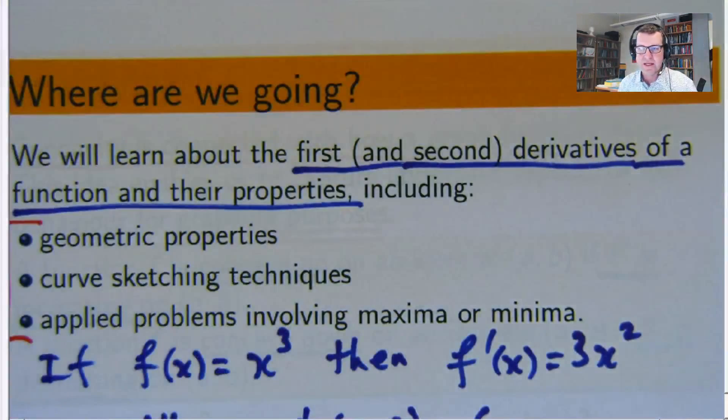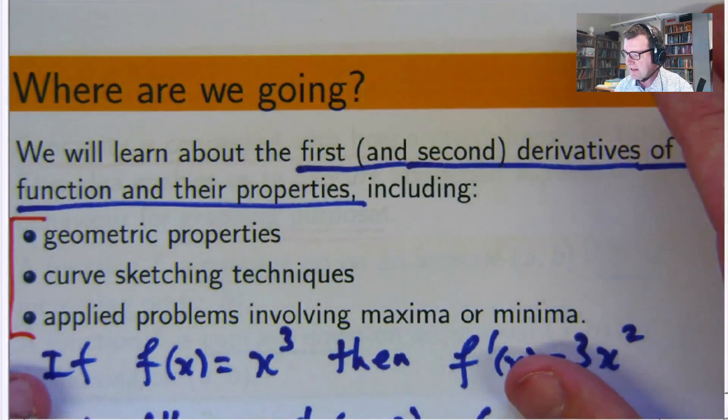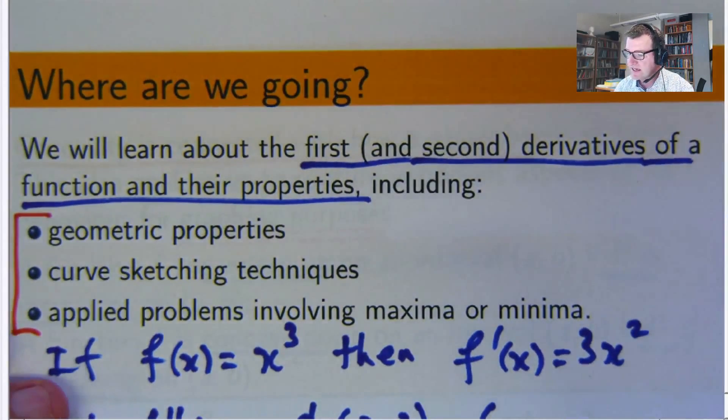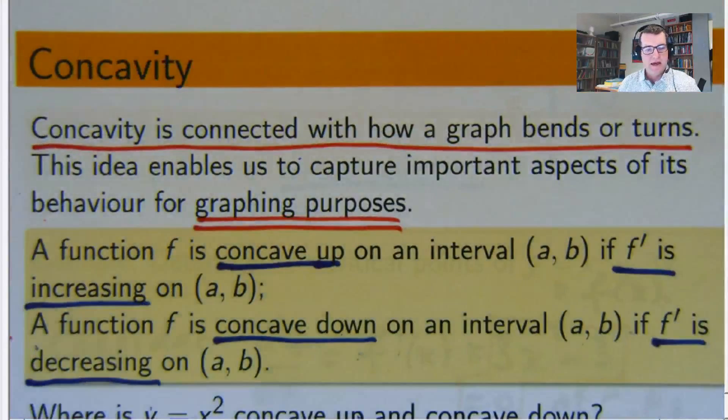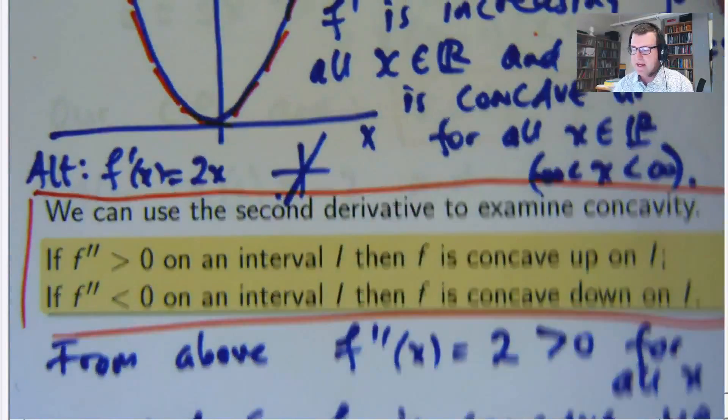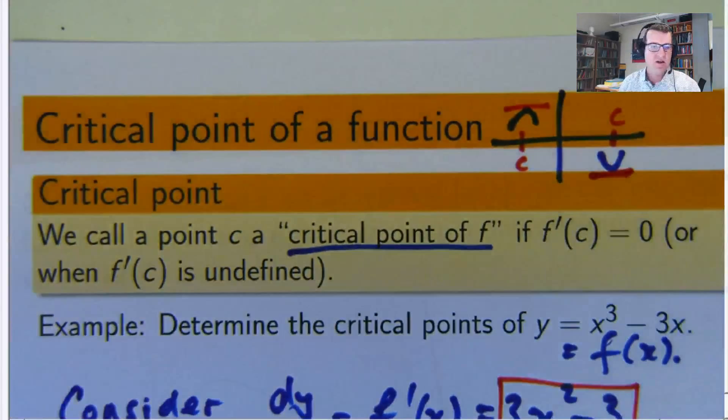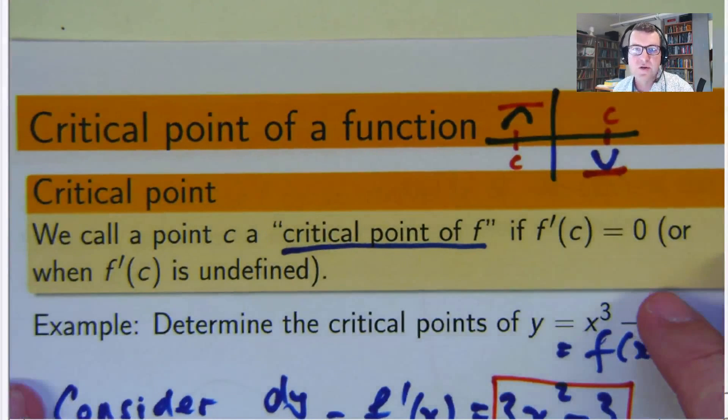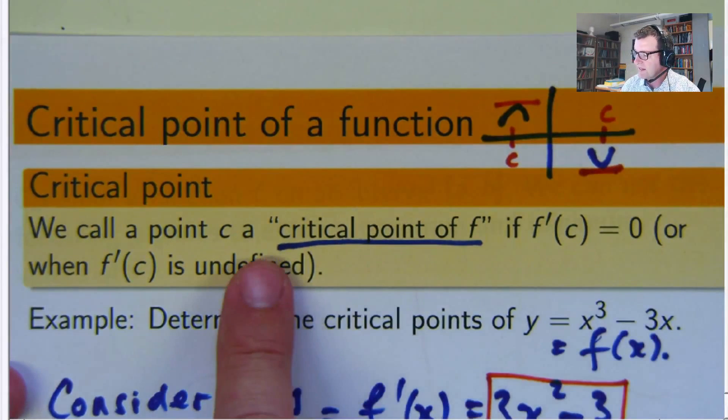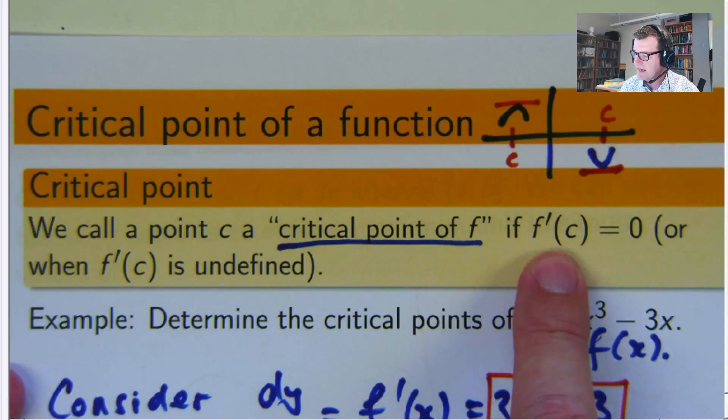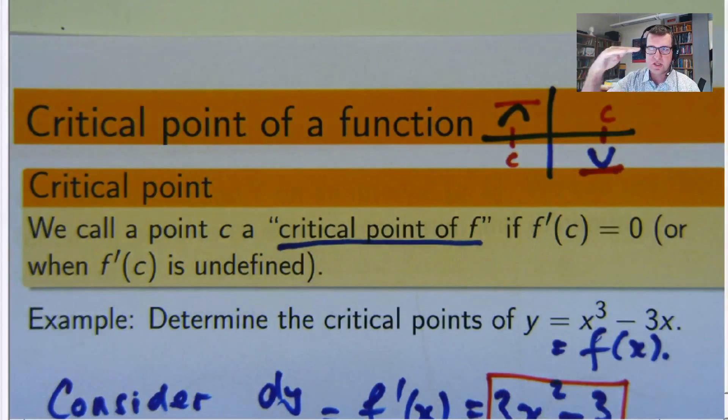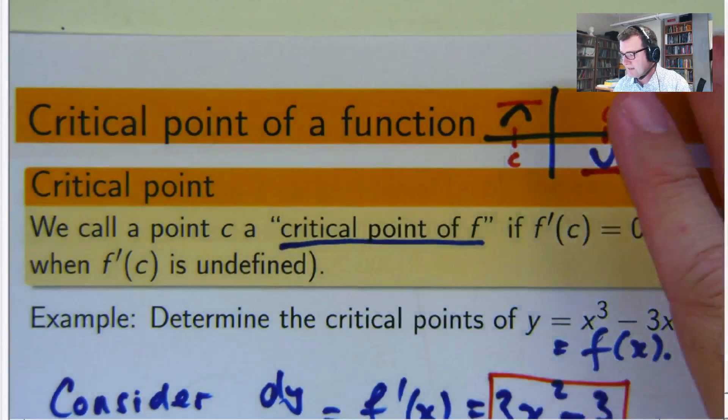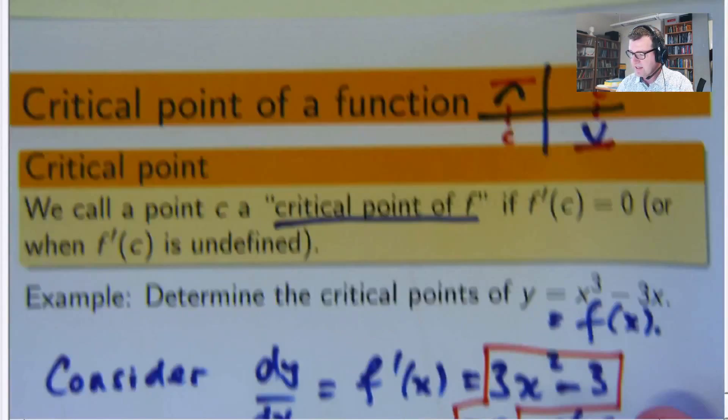Previously we saw how to use first and second derivatives to look at things like concavity, and we did some examples there. We also looked at defining the idea of a critical point. Essentially a critical point is where a function has a derivative that's equal to zero. This means the tangents have slope equal to zero - they're horizontal tangents to the curve.